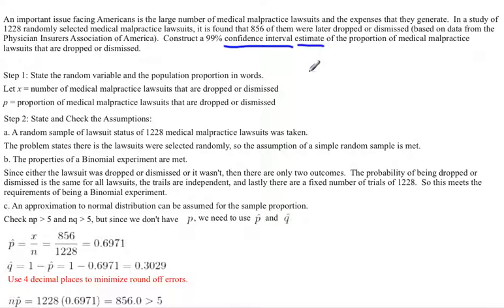So estimating, estimate are all words that tell you it's a confidence interval. Then I have to determine is it a confidence interval for proportion, mean, or some other parameter. I look for words and in this case I see the word proportion. So that tells me we are dealing with proportions. And I notice that we had one group of lawsuits, so this is actually a one-sample proportion interval.